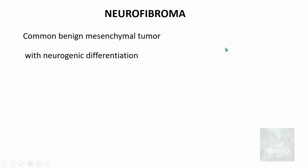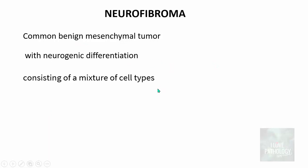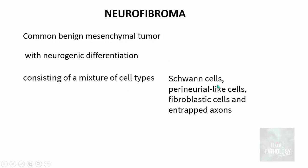Now moving on to neurofibroma. Neurofibroma is a very common benign mesenchymal tumor with neurogenic differentiation. These tumors consist of a mixture of cell types including schwann cells, perineural-like cells, fibroblastic cells, and entrapped axons.